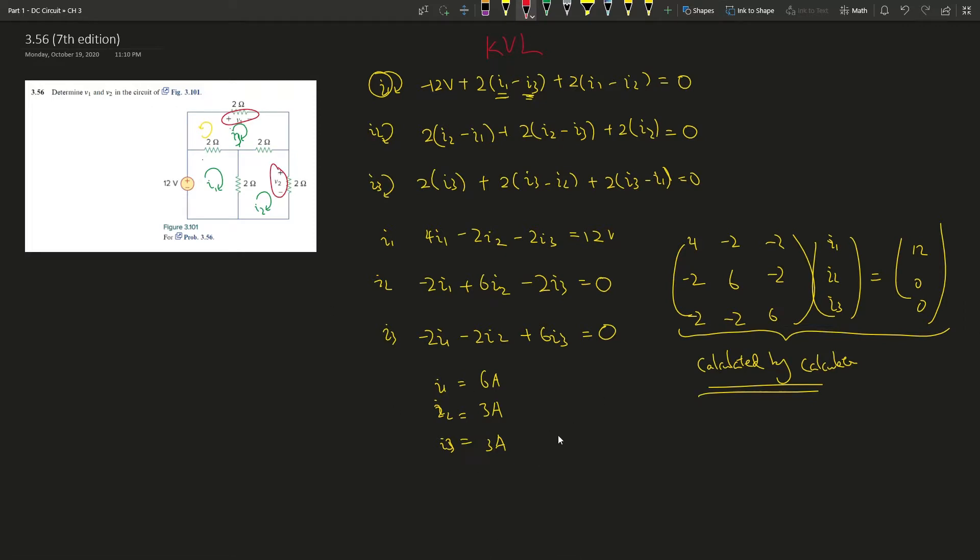So v1 is current times ohms, right? So what's the current? i3. i3 is 3 amperes times 2 ohms, and it's going into the positive direction, right?